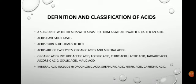In our last class we discussed indicators. There are many kinds of indicators — natural indicators and synthetic indicators. Among the natural indicators, one of the most important is litmus. Generally two types of litmus are there: red litmus and blue litmus. Acid turns blue litmus to red, as we already know from our previous class.